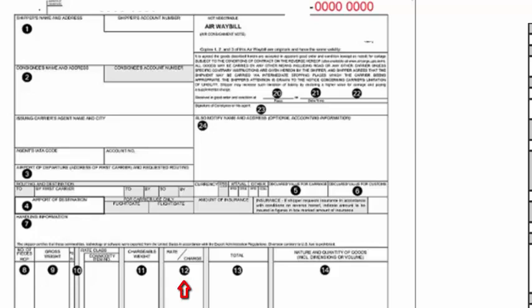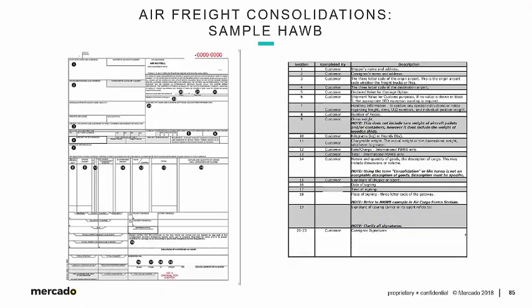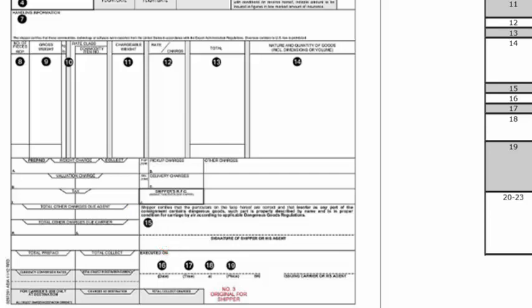The rate goes in field twelve. There are a couple of fields for the Master Airway Bill — we'll skip that for now and come back to it when we talk about the Master Airway Bill. Field fourteen, nature and quantity of goods — a description that has to be consistent with the commercial invoice and the packing list. Field fifteen, signature of shipper or agent — that's the freight forwarder — along with the date, time, and place. That pretty much wraps up the information required on a House Airway Bill.